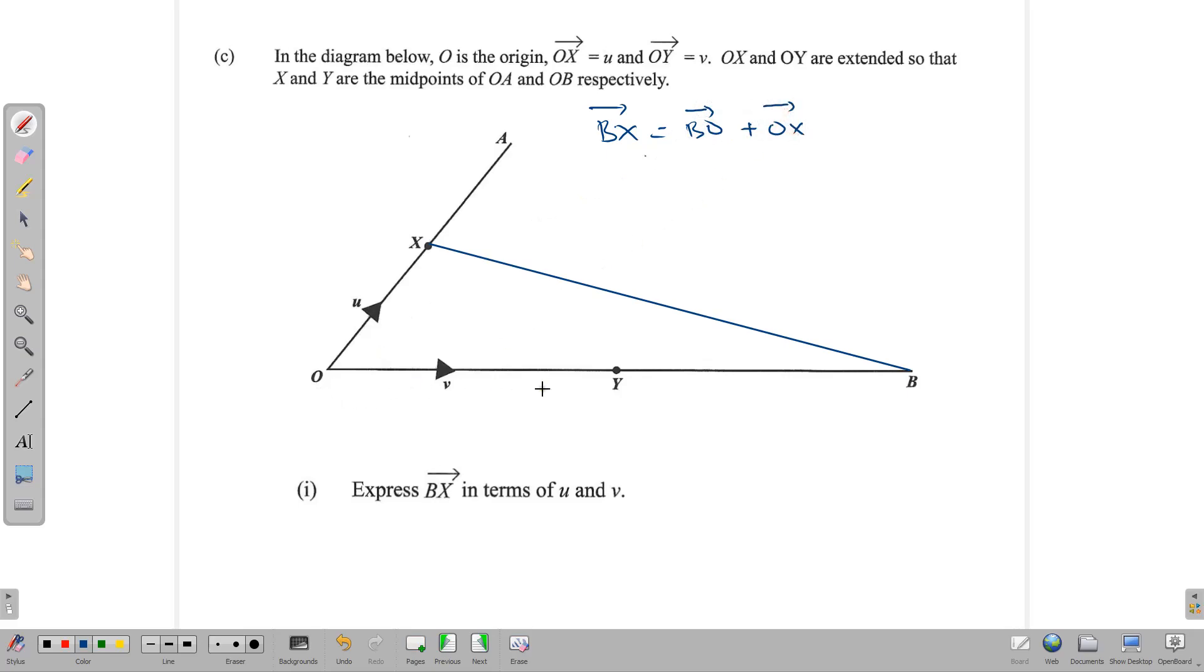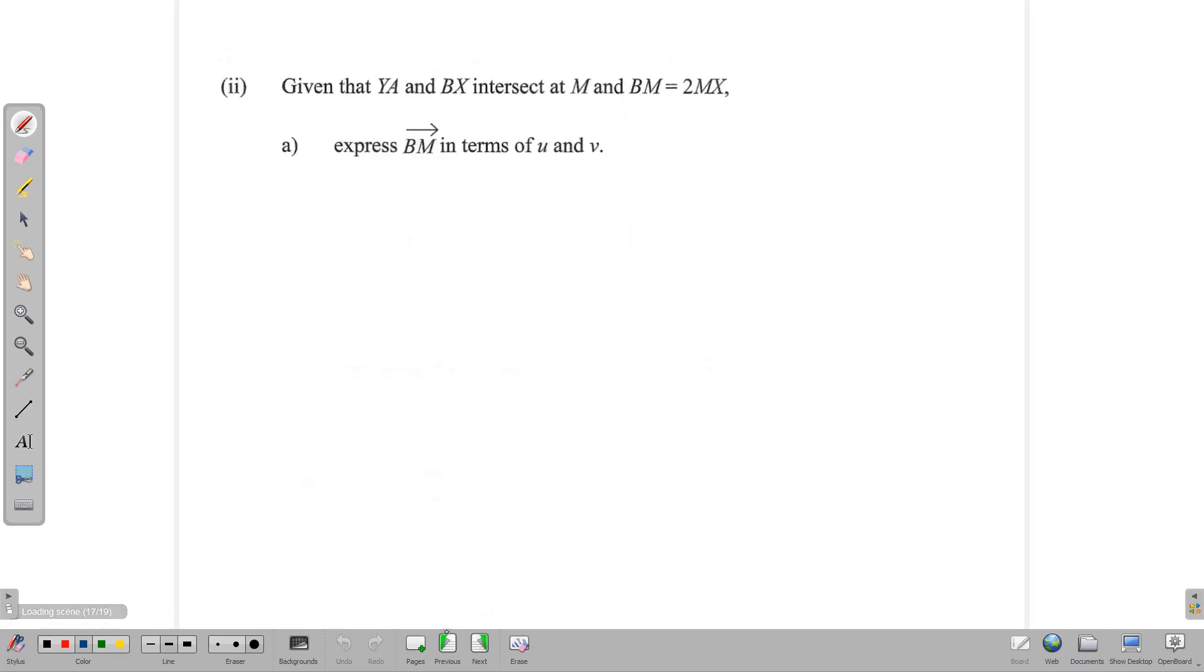Let's find BX. Let's draw a line from B to X. How do we get from B to X? To get from B to X, we can go B to O and then O to X. Now, OY is equal to V, and Y is the midpoint, so right here is also equal to V. And so this line going in that direction is equal to 2V going in that direction. But we need to use it in the opposite direction. So BX equals BO, which is minus 2V, plus OX which is U. Or if you want to write it more tidy, you could say U minus 2V. That is our answer to BX.